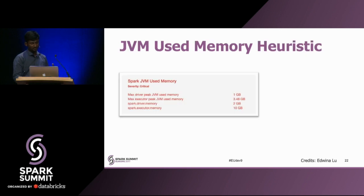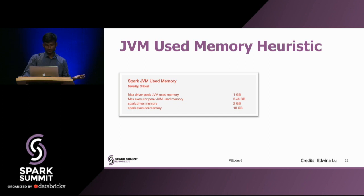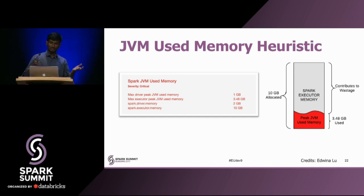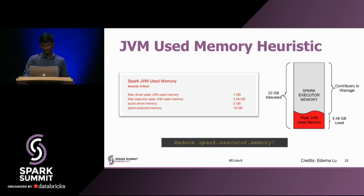We have a JVM used memory heuristic that flags jobs requesting too much memory but not actually using the entire set of resources. For example, the spark.executor.memory allocated for a job is 10 GB, but looking at the peak JVM used memory across all containers, the maximum used memory is just 3.48 GB as per the Dr. Elephant report. You're allocating 10 GB of containers but the maximum used value is just 3.48 GB — blocking so many resources and contributing to wastage. We basically recommend users to reduce the executor memory.